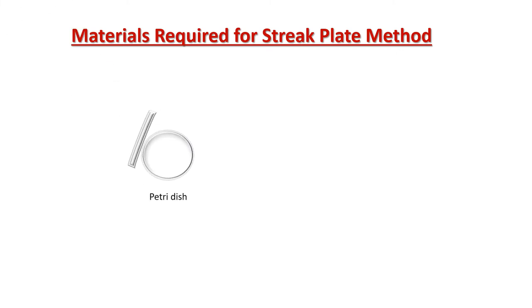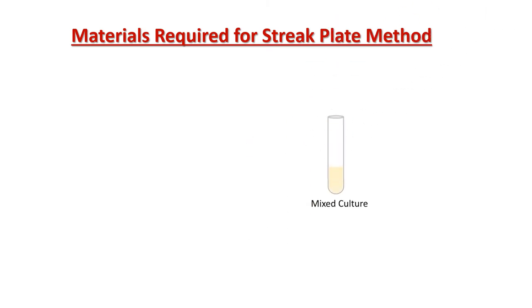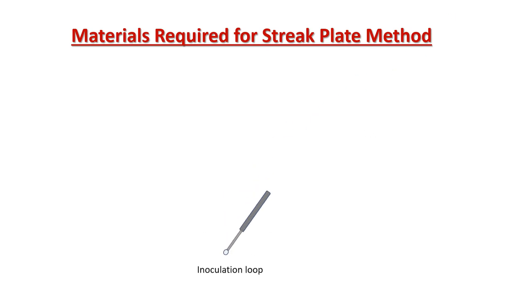Materials required for the streak plate method are: Petri dish, nutrient agar, Bunsen burner, mixed culture, inoculation loop, and autoclave.